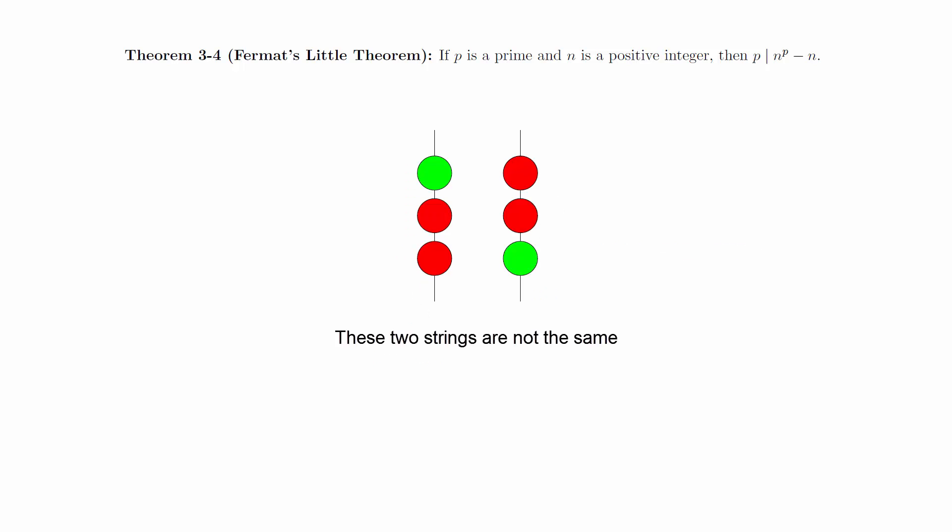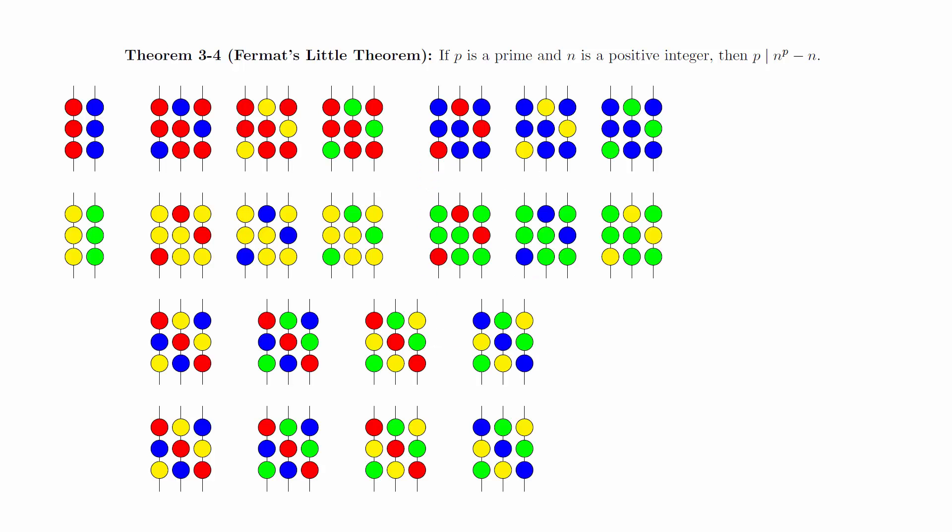Specifically, this means that these two strings should be considered to be different. Here are all 64 strings that we can make. Out of these, exactly 4 of them will be a solid color. We will remove these from the collection.